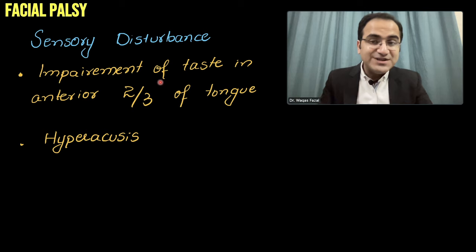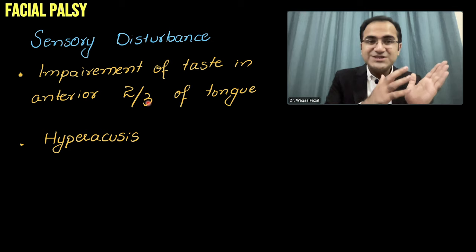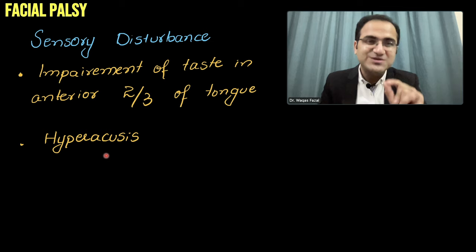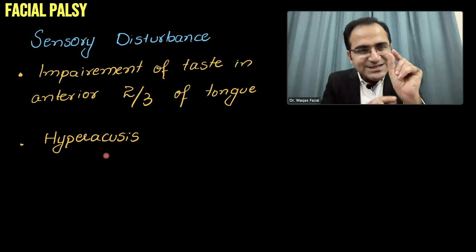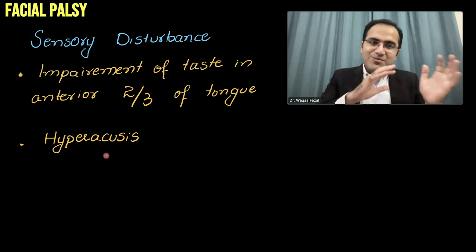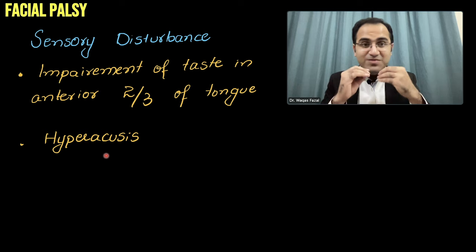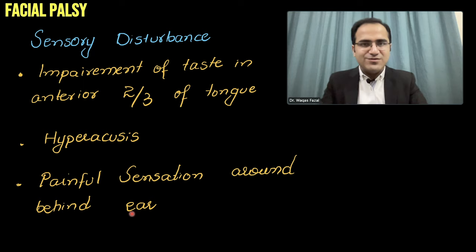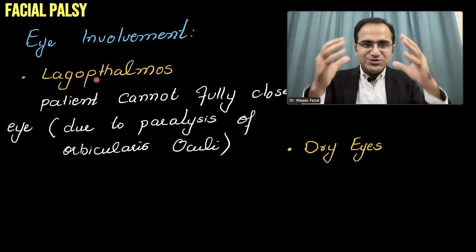There will be sensory disturbance and impairment of taste in the anterior two-thirds of the tongue, because the anterior two-thirds of the tongue is supplied by the chorda tympani, a branch of the facial nerve. So if the facial nerve is damaged, there will be absence of taste sensation. There will also be hyperacusis — a small muscle, the stapedius muscle, is supplied by the facial nerve; if that muscle is affected, it will amplify sounds, resulting in hyperacusis. There will also be painful sensation around and behind the ear, as part of the external ear canal is supplied by the facial nerve.